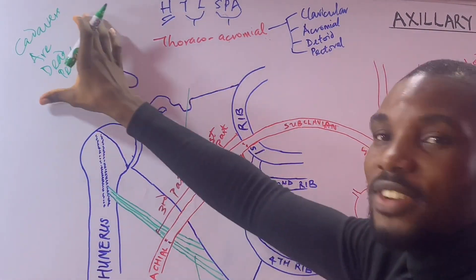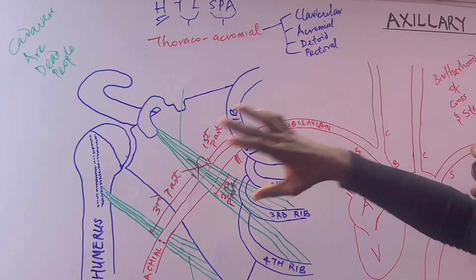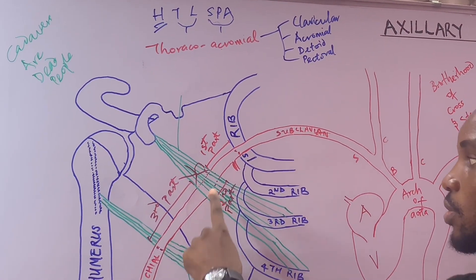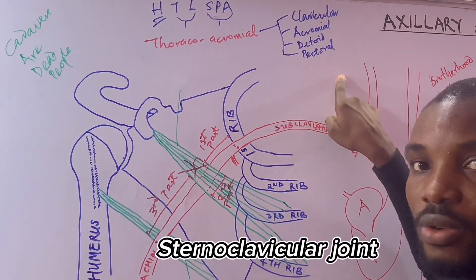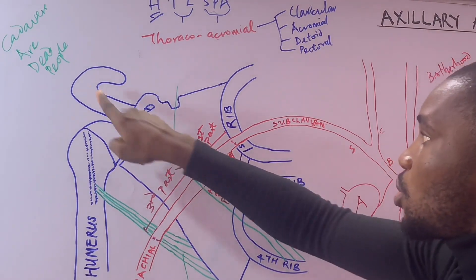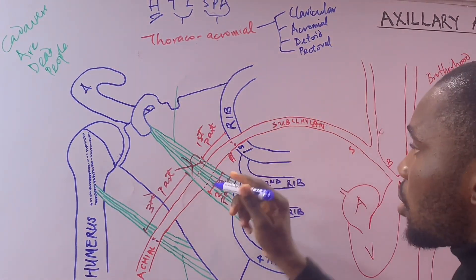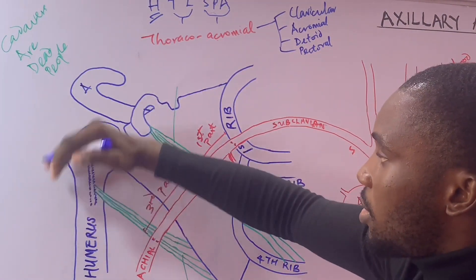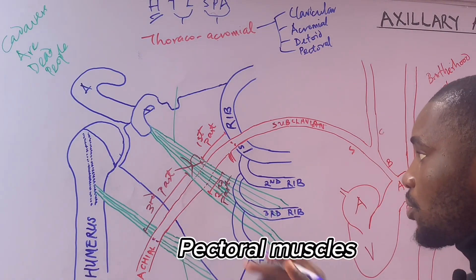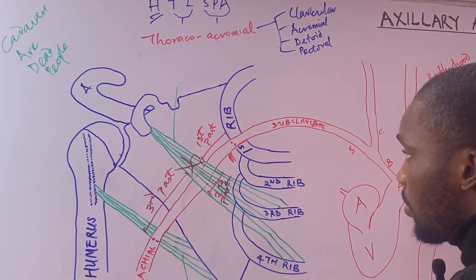The clavicular branch goes toward the sternoclavicular joint and supplies the head of the clavicle. The acromial branch goes up toward the acromion and supplies it and surrounding structures. The deltoid branch supplies the deltoid muscle, and the pectoral branch supplies the pectoral muscles, which cover the anterior wall of the axilla.